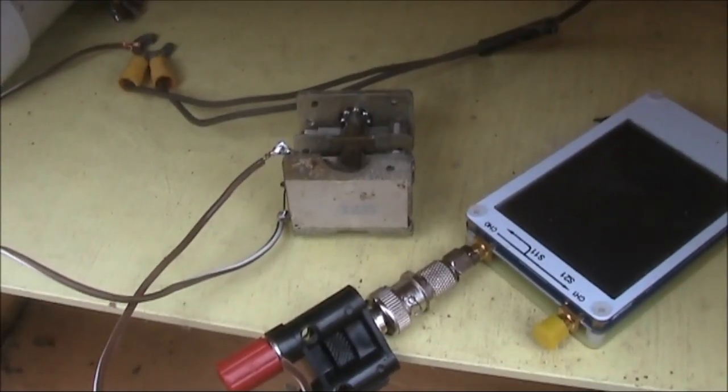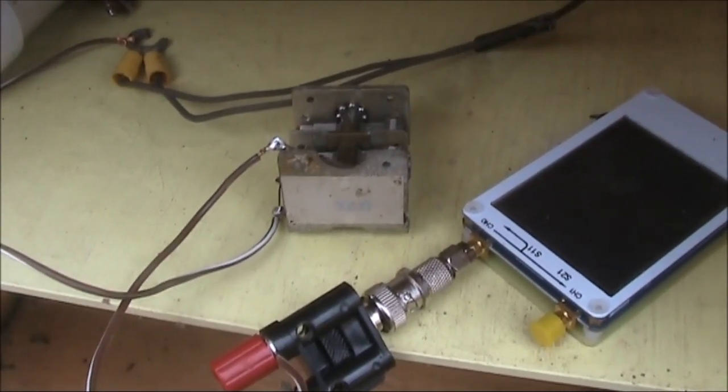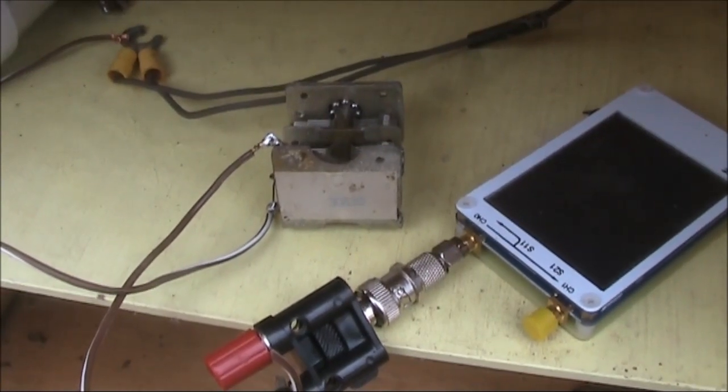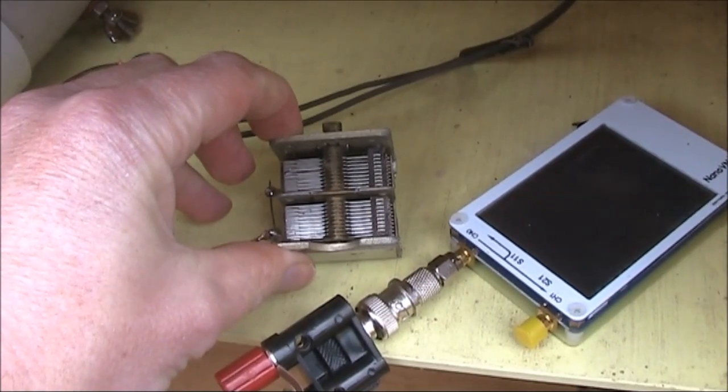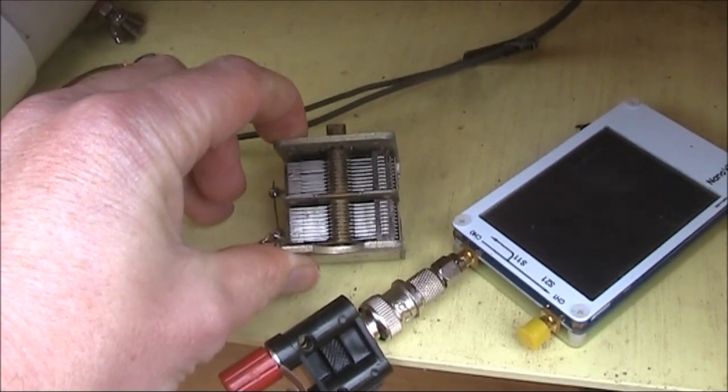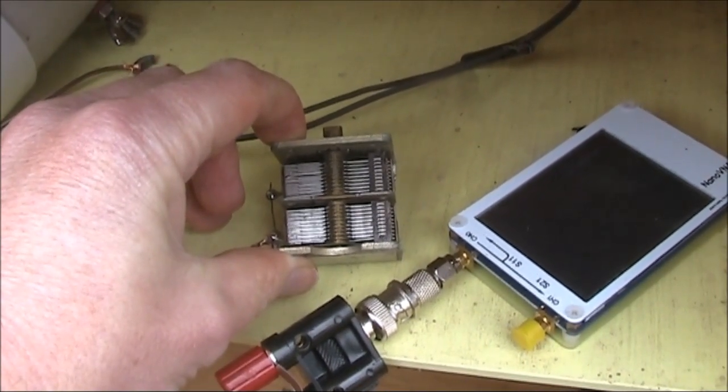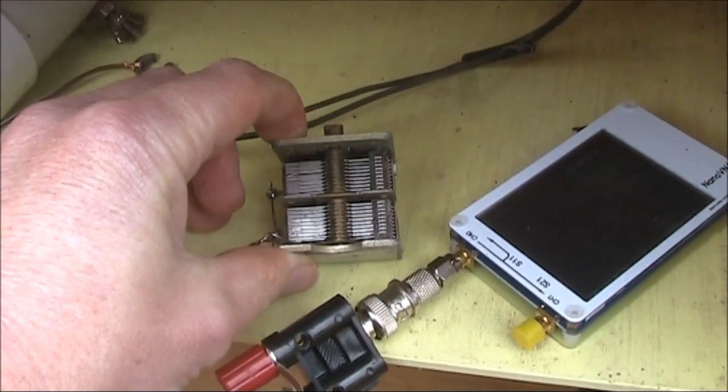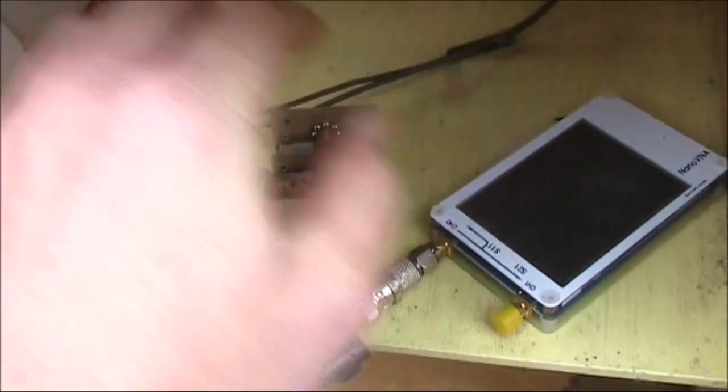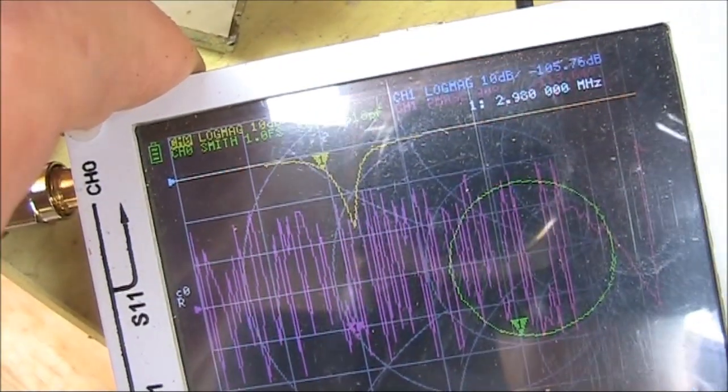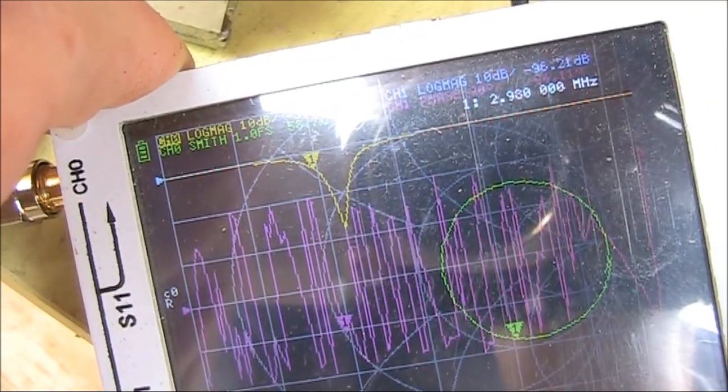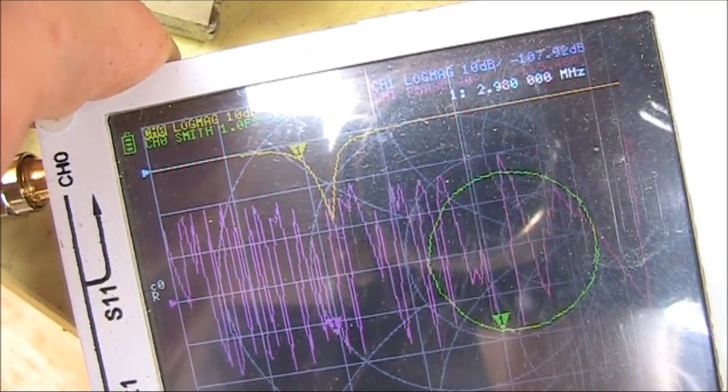The next thing I've done is to put a variable capacitor in series with the antenna connection. I've got both sections in parallel, so I'd say the capacitance here would be about 600 to 800 picofarads. I've got it fully meshed, and if you look at the screen you can see that the frequency has gone up a bit.